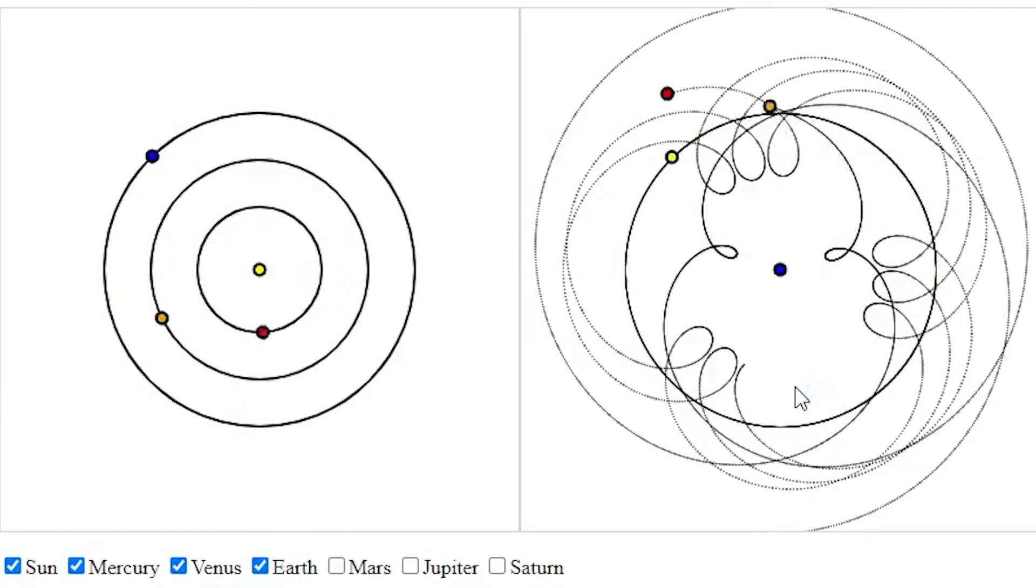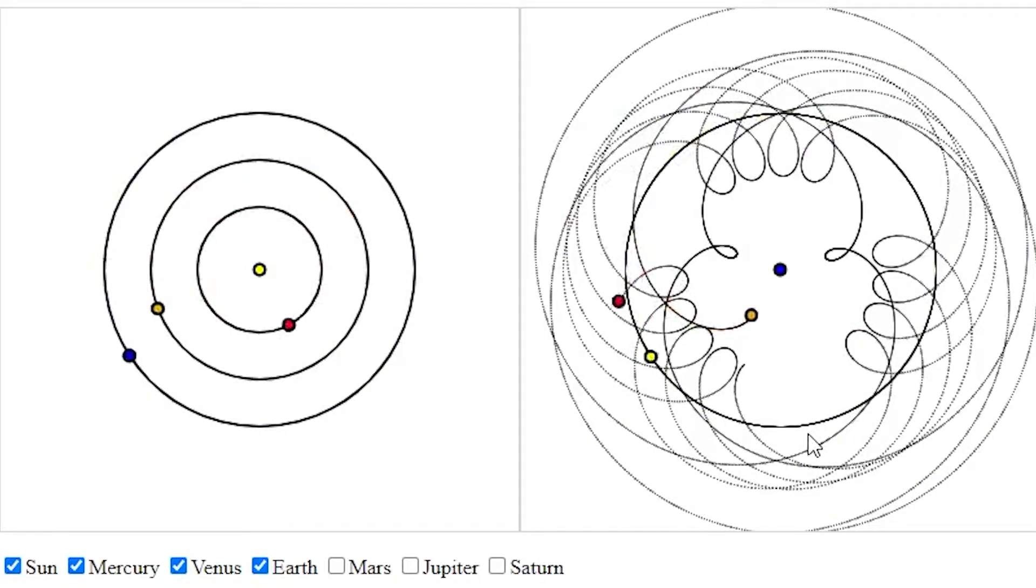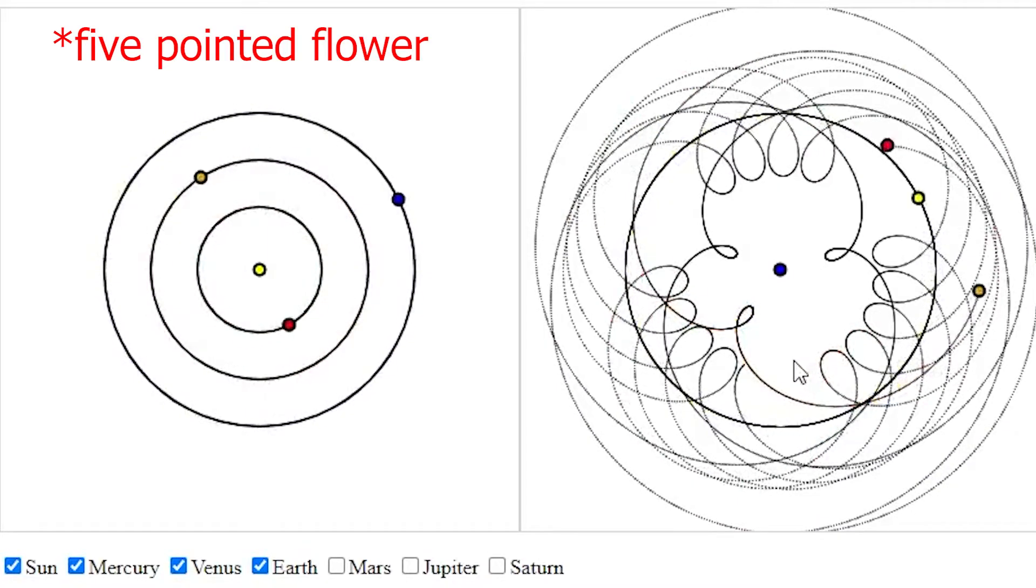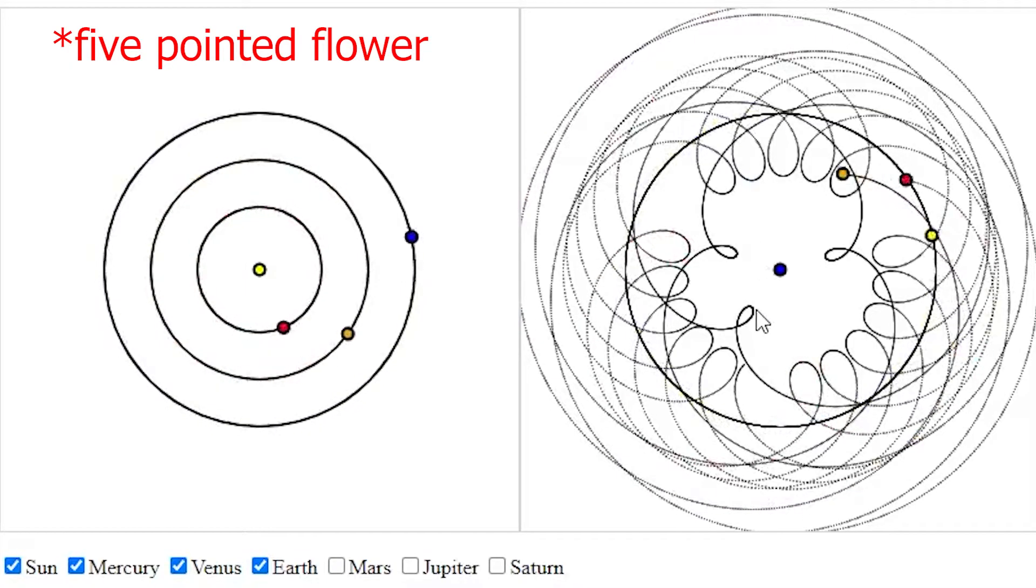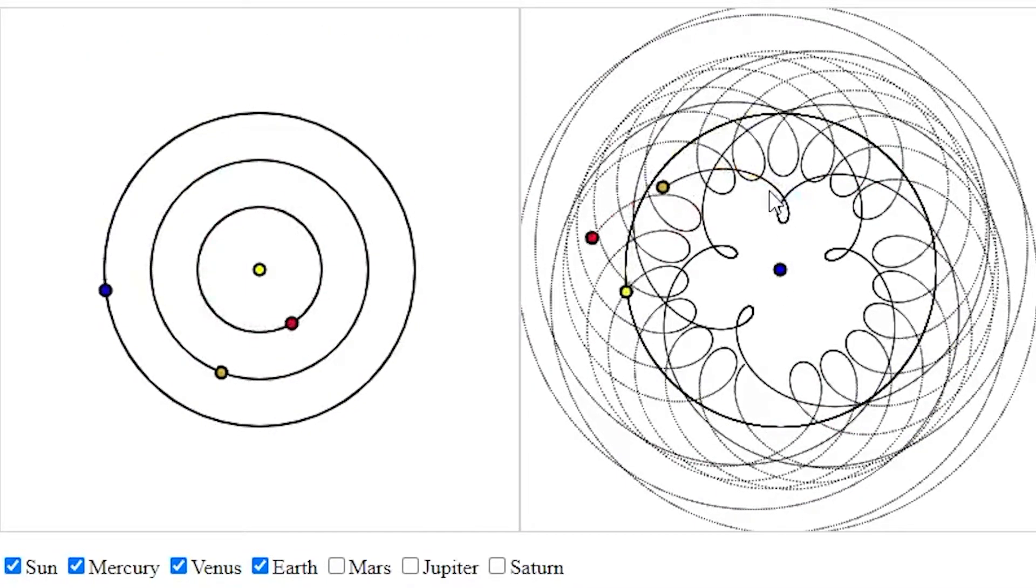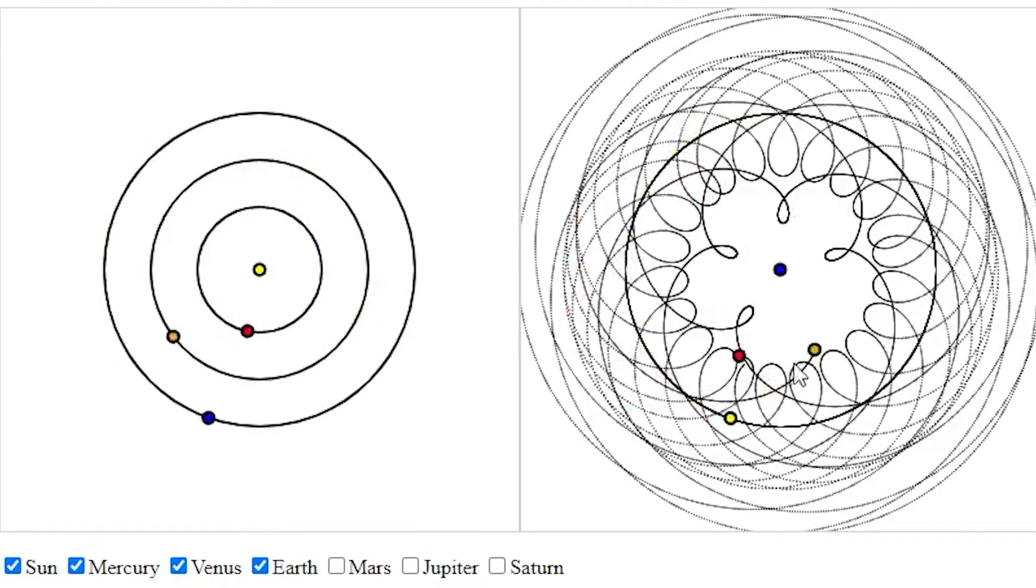You can see it creates beautiful patterns and the pattern of Venus is especially beautiful as it creates a four-pointed flower that we'll see in a moment. So here we have the fourth side and then we get the last one right here. Here we see that five-pointed flower.